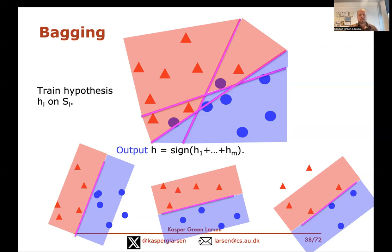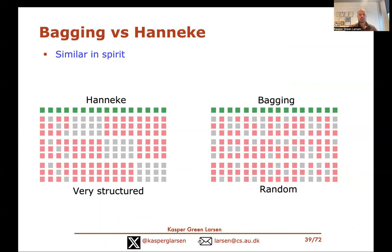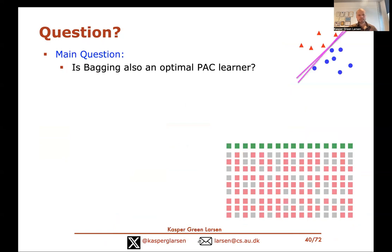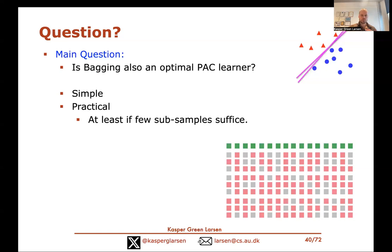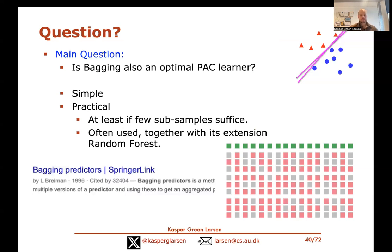Comparing bagging to Hanneke's approach, they're very similar in spirit — the only difference is that Hanneke has a very structured way of subsampling, while bagging subsamples randomly. The question we ask is: is bagging also an optimal PAC learner? It's definitely a simple and practical algorithm. In fact, bagging is used all the time in practice — it's essentially a simple version of random forests, and Breiman's original paper introducing bagging has 32,000 citations.